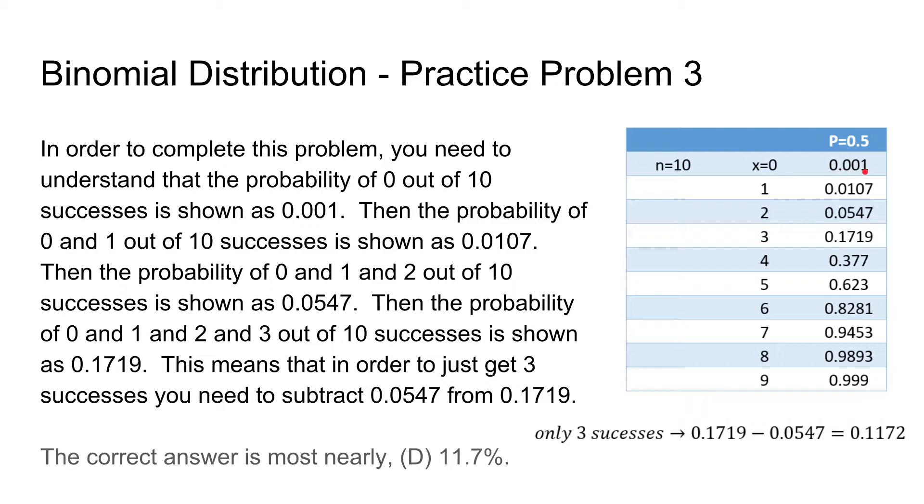Then we also need to know that these binomial distribution tables are cumulative. So the probability of 0 or 1 out of 10 successes is going to be shown as 0.0107. And then if we want the probability of 0, 1, or 2 successes, then that's going to be 0.0547.